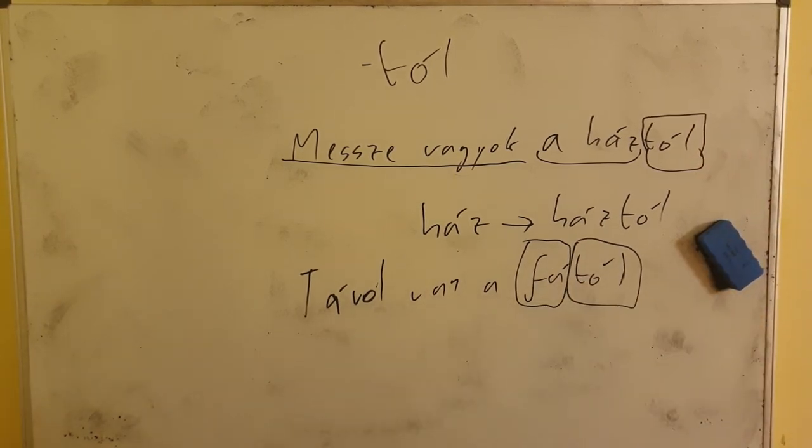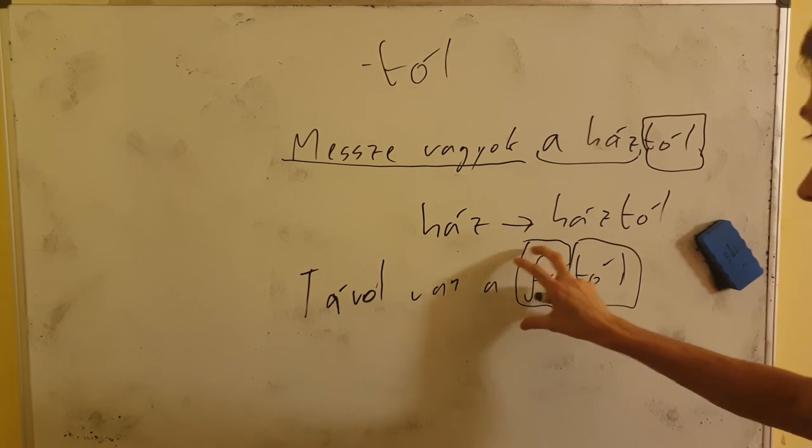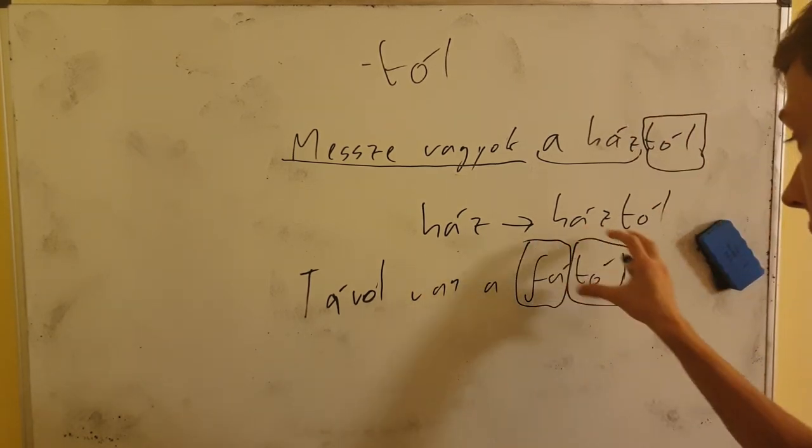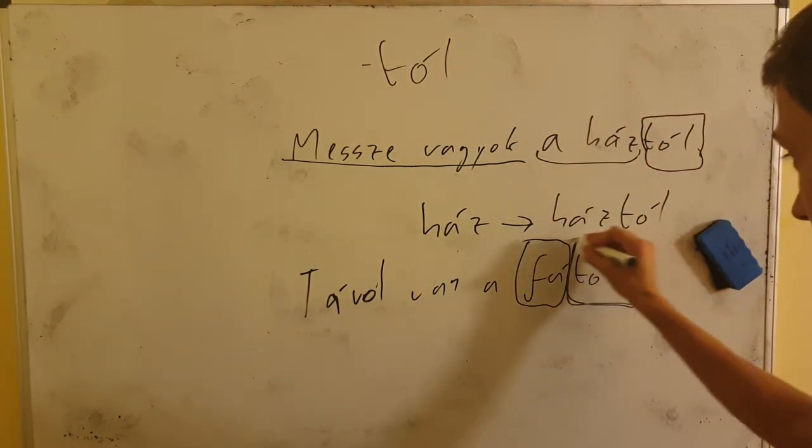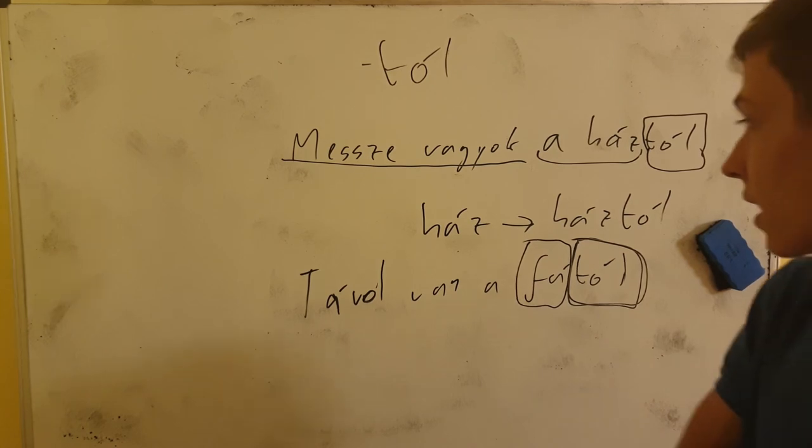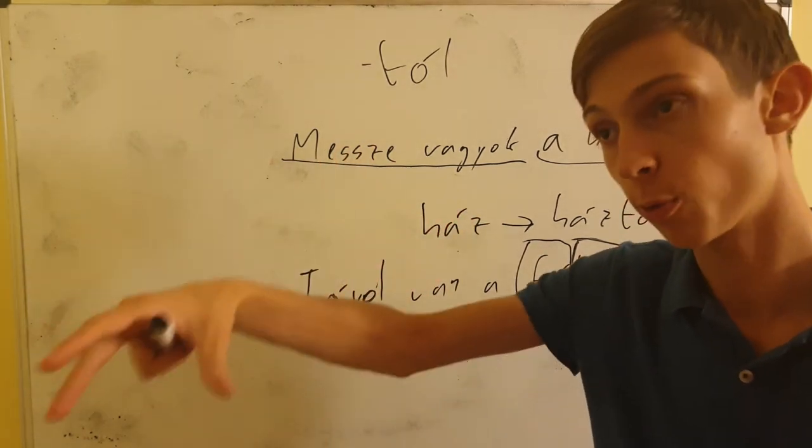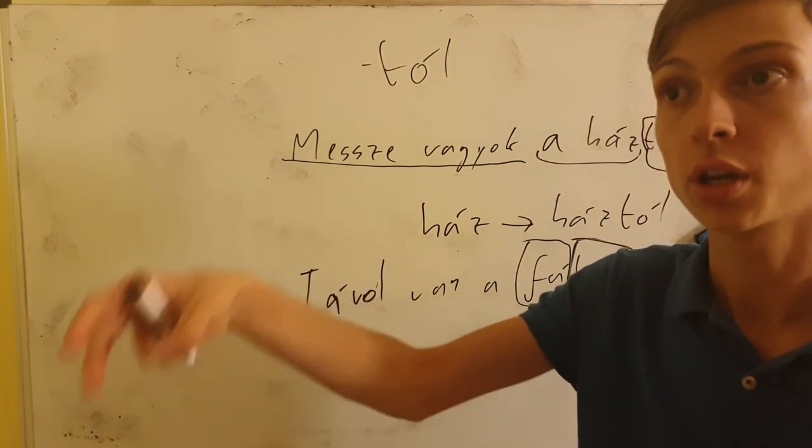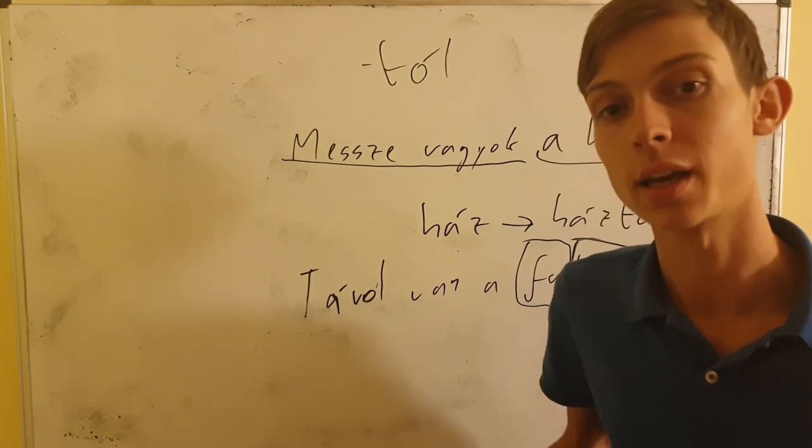One more factor. So this means away, he is. And then fa is the tree, but fa tol is from the tree. Thanks to this tol means away from. So that's it. It's about location away from something, to which, to the word expressing which, you add the tol suffix to indicate it.